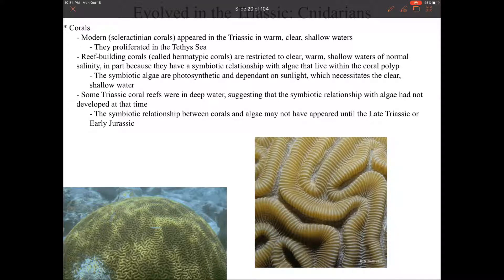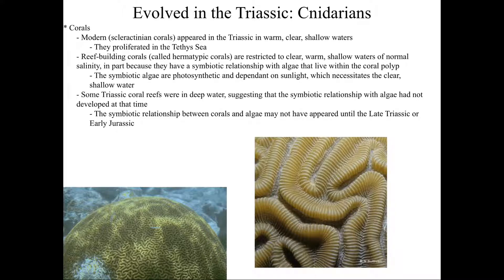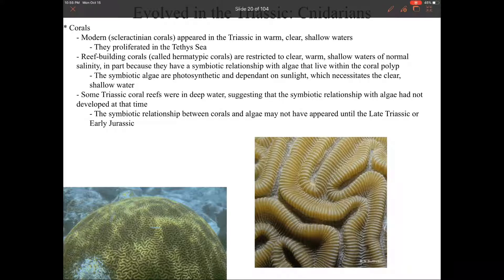Some of our invertebrates that evolve are our cnidarians, which remember our corals almost got wiped out at the Permian extinction event. So now we see our modern corals, which are called scleractinian corals. They become really common in the Tethys Ocean, and then they just kind of spread from there. Really any modern coral that you can think of is just this last surviving group, which we call scleractinian corals.